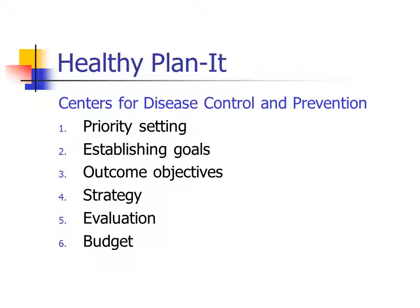Another model from the CDC — I like the title, it's kind of catchy — is called Healthy Planet. The steps include priority setting, establishing goals, outcome objectives, strategy, evaluation, and budget. A little bit different from the others, but you still see that logical flow.